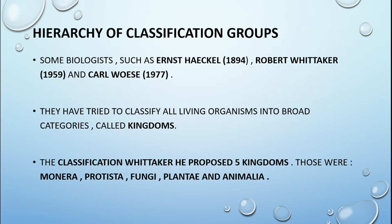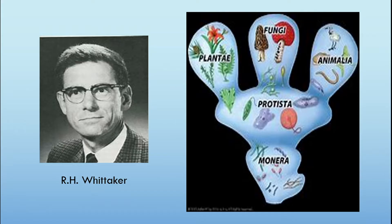Whittaker proposed five kingdoms: Kingdom Monera, Kingdom Protista, Fungi, Plantae, and Animalia. Monera are the primary ones, Protista are slightly higher, and then Fungi, Plantae, and Animalia are the higher ones.